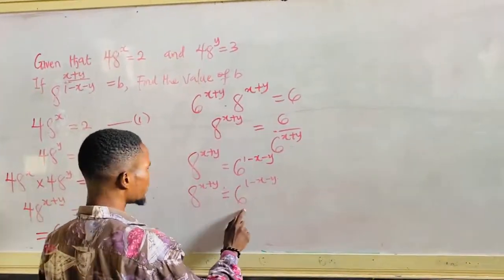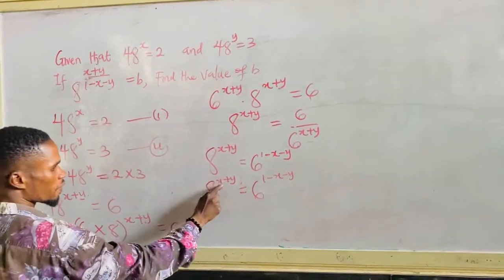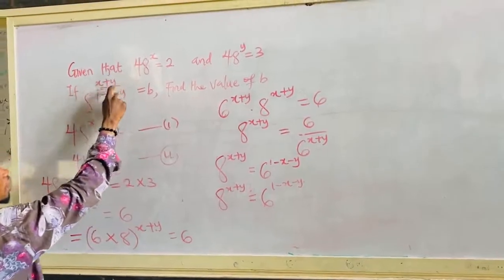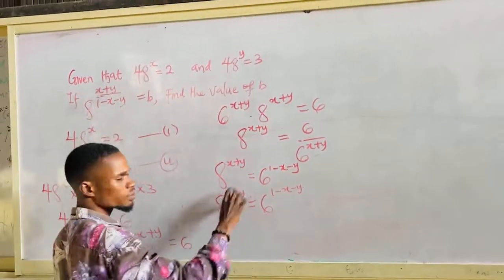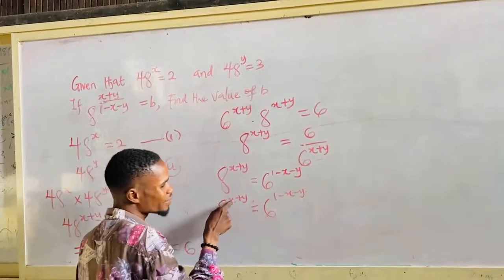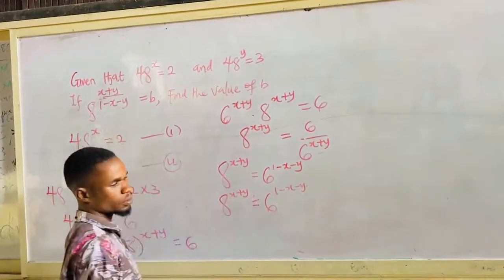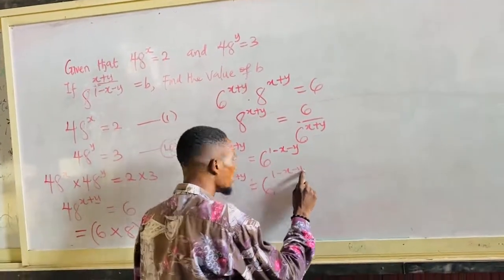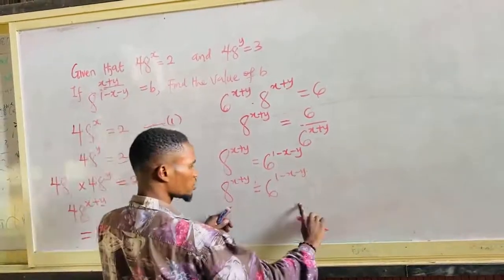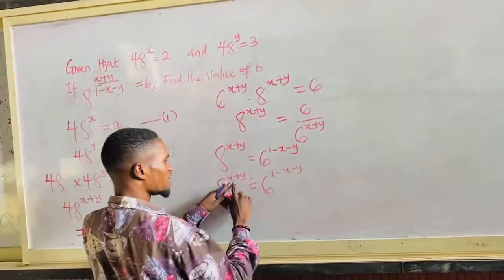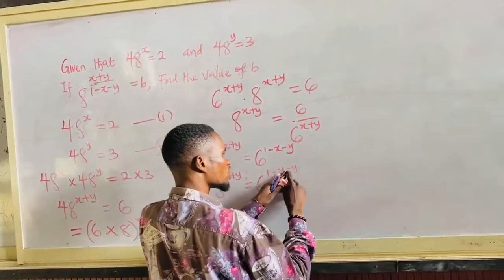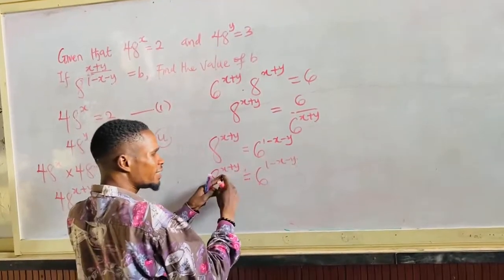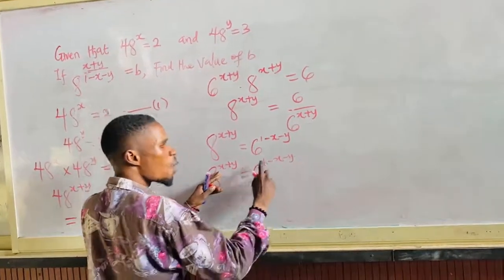Now what is the difference between this and this? Here x plus y is the power on 8. But on the right hand side, the power is 1 minus x minus y. So we have 8 raised to the power of x plus y equal to 6 raised to the power of 1 minus x minus y.